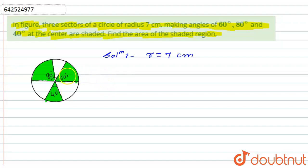If I find the area of this sector, then I will add the area of this sector and this sector, so I will get the area of the three sectors. So here I can say that the area of shaded region will be nothing but area of the sector with central angle 60 plus area of the sector with central angle 80 plus area of the sector with central angle 40.